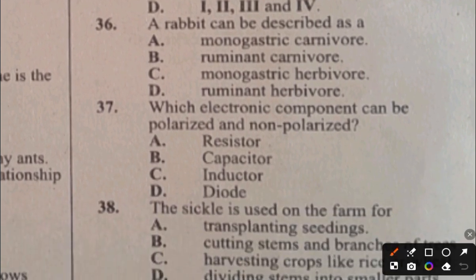Question 37. Which electronic component can be polarized and non-polarized? A. Resistor, B. Capacitor, C. Inductor, D. Diode. The answer to question 37 is B, capacitor.